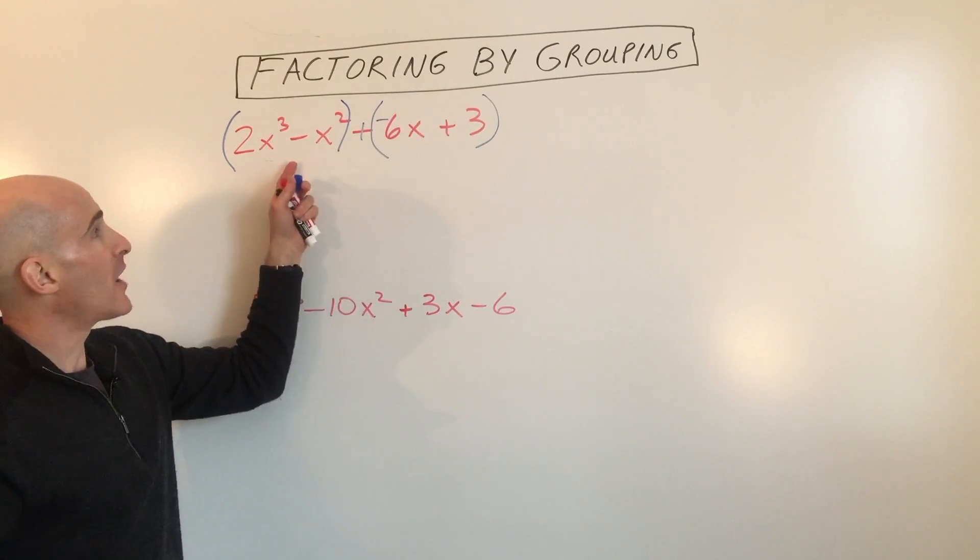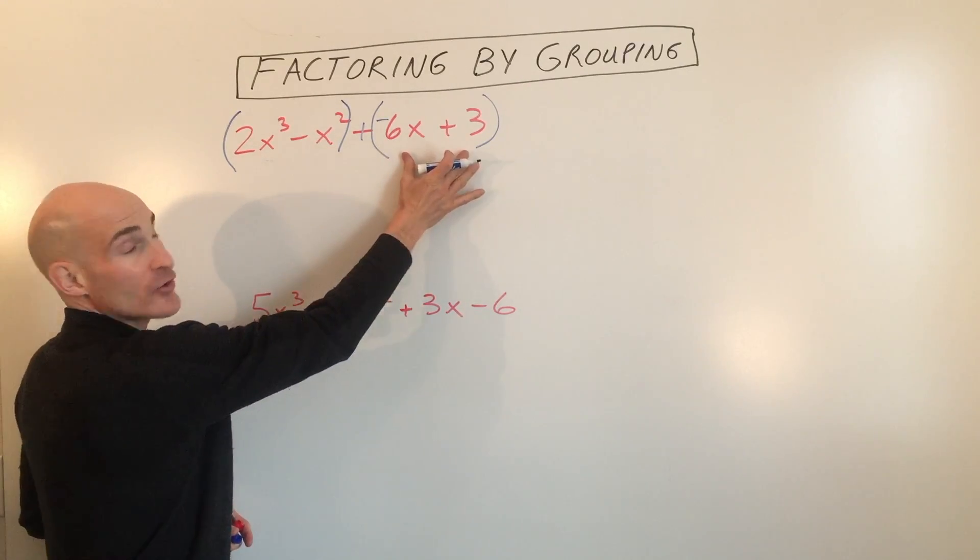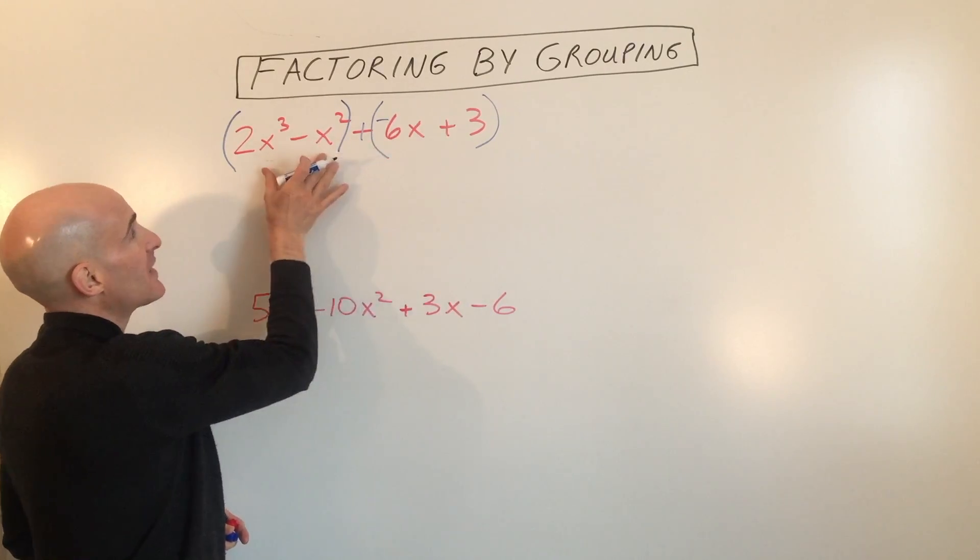Subtraction is like adding the opposite. I grouped the first two, grouped the last two. Now what you're going to do is factor out the greatest common factor out of this group and out of this group.